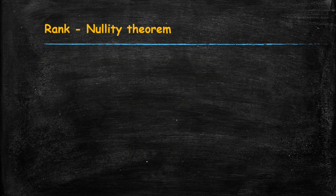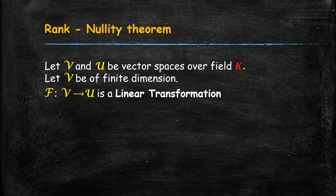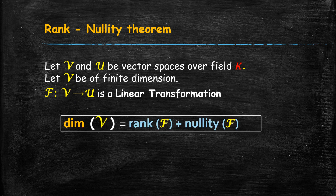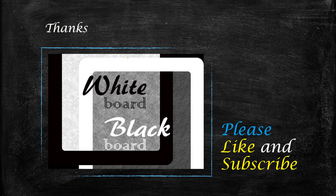Our next theorem is the rank-nullity theorem: if V and U are vector spaces over a field K with V finite-dimensional, and F is a linear transformation from V to U, then dim(V) = rank(F) + nullity(F). This is verified by our example: dim(R⁴) = 4, rank(F) = 2, nullity(F) = 2, and indeed 4 = 2 + 2. With this we complete our lecture. Thanks for listening — please like and subscribe for more videos.